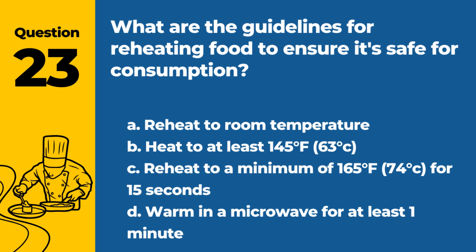Question 23. What are the guidelines for reheating food to ensure it's safe for consumption? A. Reheat to room temperature. B. Heat to at least 145°F, 63°C. C. Reheat to a minimum of 165°F, 74°C, for 15 seconds. D. Warm in a microwave for at least one minute. Answer: C. Reheat to a minimum of 165°F, 74°C, for 15 seconds. Reheating food to 165°F, 74°C, for 15 seconds ensures that it's safe for consumption by killing any potential pathogens.